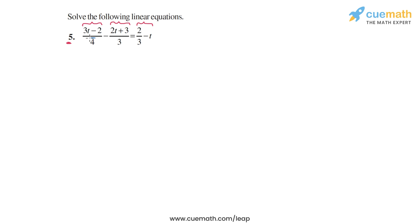Well, we have this 4 and this 3 on the LHS denominators, and we have this 3 on the RHS as a denominator. The LCM of these three numbers, 4, 3, and 3, the LCM is 12. So what we can do is multiply both sides of the equation by 12.